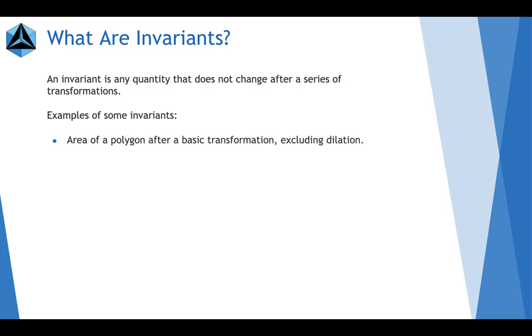Area of a polygon after a basic transformation, excluding dilation. For example, if you take a triangle and you rotate it 120 degrees, it's still the same triangle. It's not going to get any bigger or smaller. It's just going to be rotated.